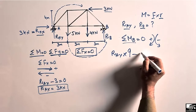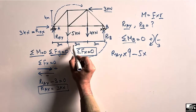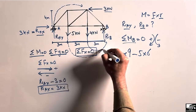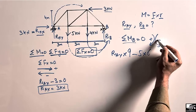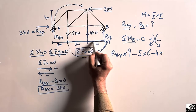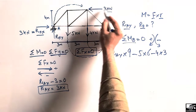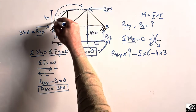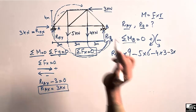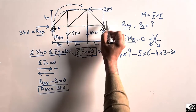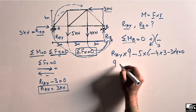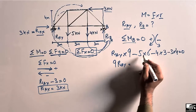The 4 kN load also creates an anti-clockwise moment about B, so it is minus 4 multiplied by its moment arm of 3 meters. The 3 kN horizontal load also creates an anti-clockwise moment about B, so it is minus 3 multiplied by its moment arm of 4 meters. Summation of all moments about B equals zero.